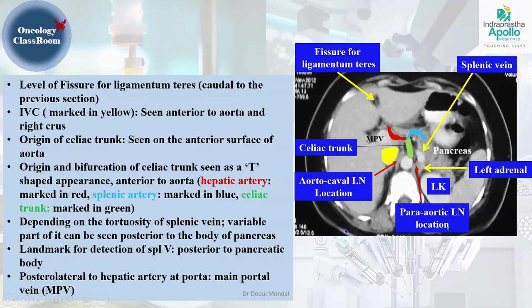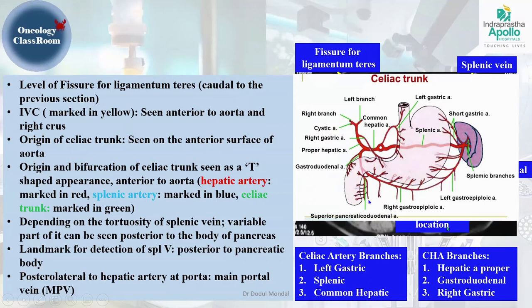The celiac artery gives three main branches: the left gastric, the splenic, and the common hepatic. The common hepatic artery divides into the hepatic artery proper, gives off the gastroduodenal artery and a branch of the right gastric artery. The hepatic artery proper gives a cystic branch, then divides into right and left branches, gradually becoming sinusoidal arteries and veins, which form the left and right hepatic veins, draining into the inferior vena cava.